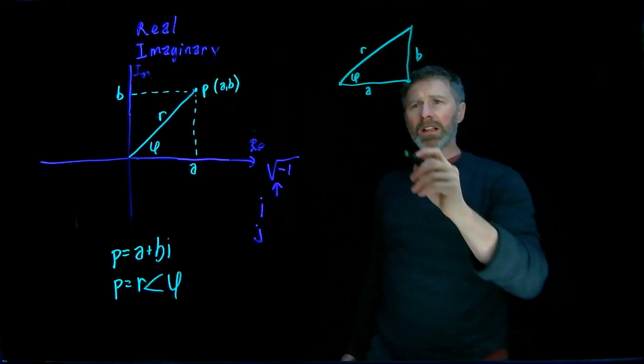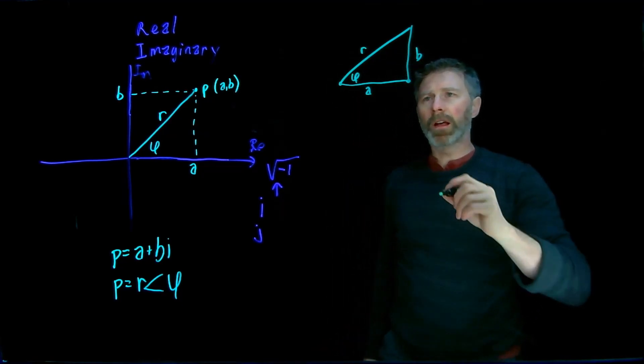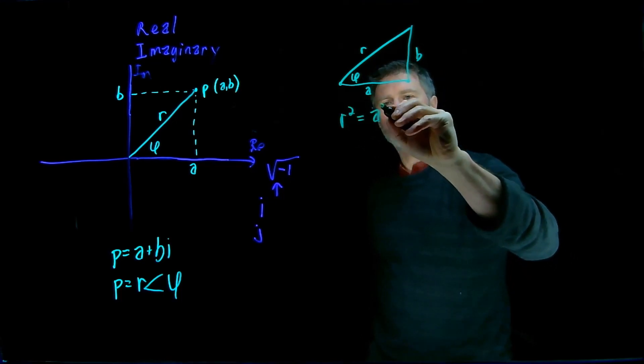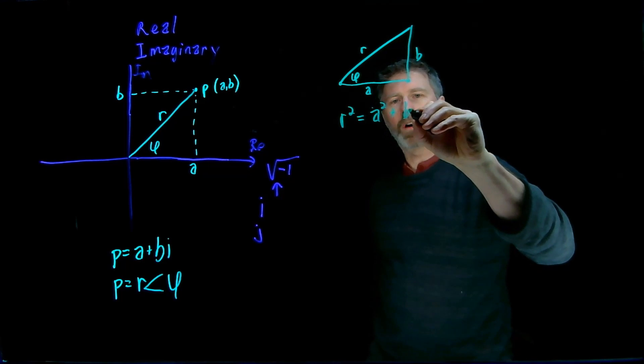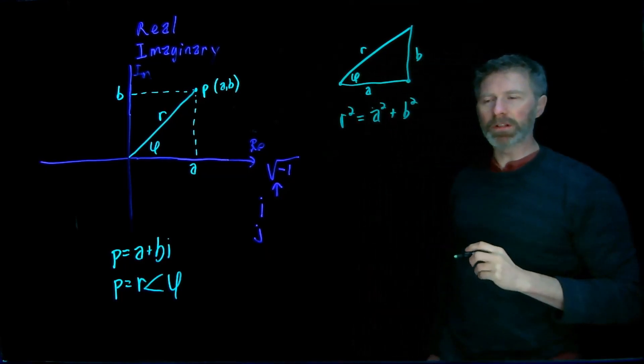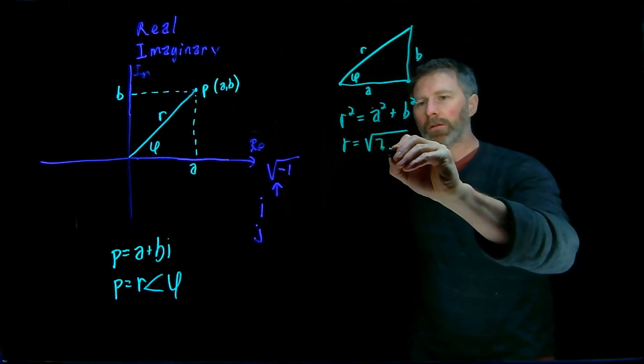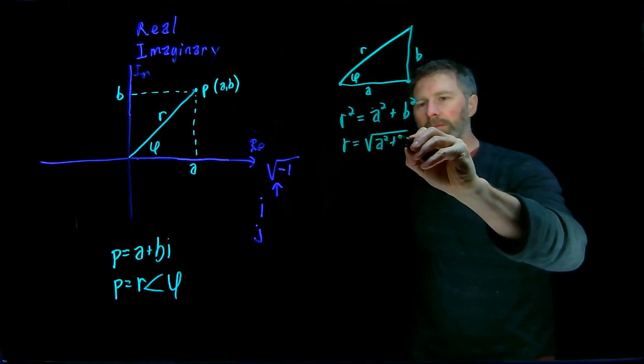And we can see that this is a right triangle. And so with that right triangle, that value of R, we can use Pythagoras theorem. R squared is equal to A squared plus B squared, and therefore R is equal to the square root of A squared plus B squared.